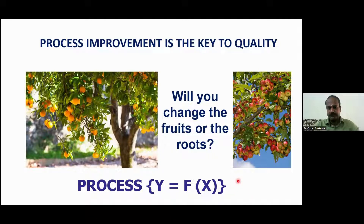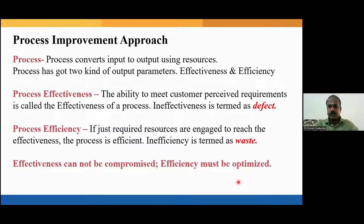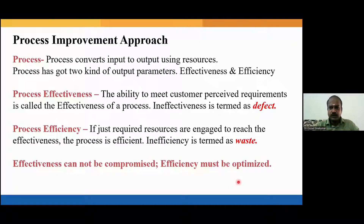To understand the relationship between x and y, we require statistical tools and techniques, which we will be learning in the later stages of this training program. Process improvement is an unavoidable activity, and all of us must understand our responsibility to sustain and improve results by sustaining and improving process capability. A process has two parameters: process effectiveness and process efficiency. A process is a set of activities performed under specified conditions to convert inputs into desired outputs.